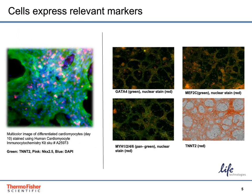Here we show cardiomyocytes expressing key physiological markers throughout the development process. On the left are cardiomyocytes generated using the PSC Cardiomyocyte Differentiation Kit and stained using the Human Cardiomyocyte Immunocytochemistry Kit, showing TNNT2 — a key marker of cardiomyocyte population — and NKX2.5, a late developmental marker. On the right are sheets of cardiomyocytes at day 12, showing GATA4 and MEF2C, which are mid-stage developmental markers, and MYH1, 2, 4, and 6, which are markers of mature cardiomyocytes.